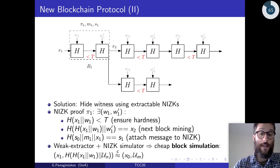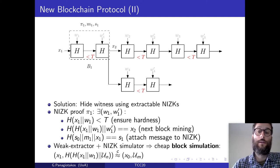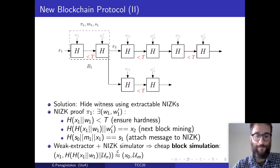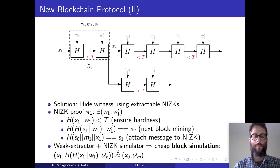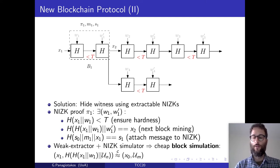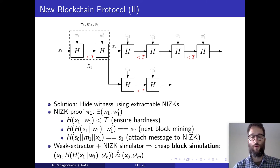All these changes help us in being able to simply simulate a block. We can do that because, first, we are able to simulate the second hash x2 by just randomly sampling a new string, and this string is going to be indistinguishable from the actual hash due to the weak randomness extractor property. And secondly, because we can use the NIZK simulator to simulate the NIZK proof of the block.